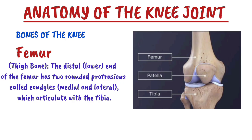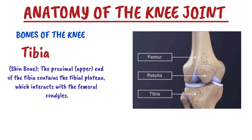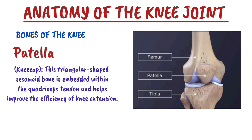The condyles are the medial and the lateral condyle, and they articulate with the tibia. The tibia, also called the shin bone, has a proximal end that contains the tibial plateau, which interacts with the femoral condyles. The patella, also called the knee cap, is a triangular shaped sesamoid bone embedded within the quadriceps tendon and helps to improve efficiency of knee extension.